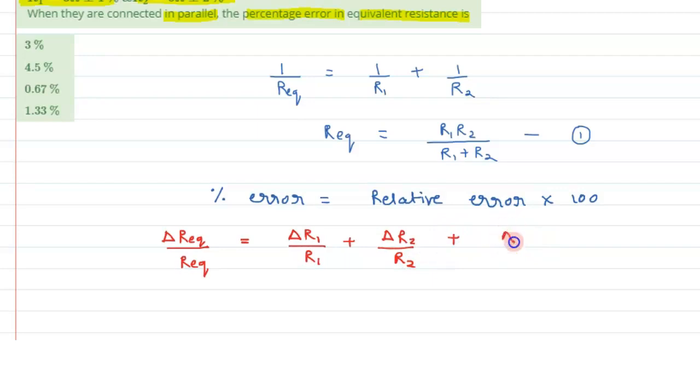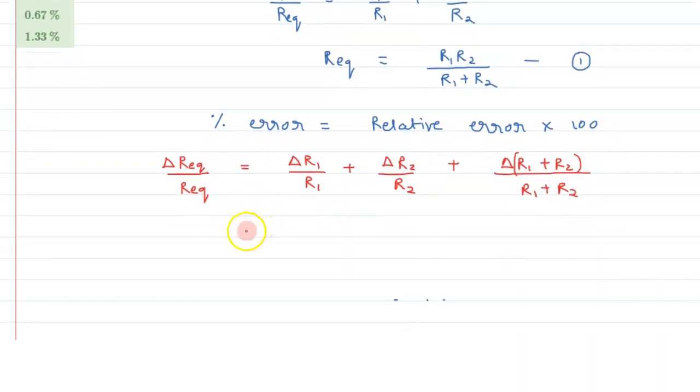Plus delta R1 plus R2 divided by R1 plus R2. So this is the formula we are going to use for relative error.